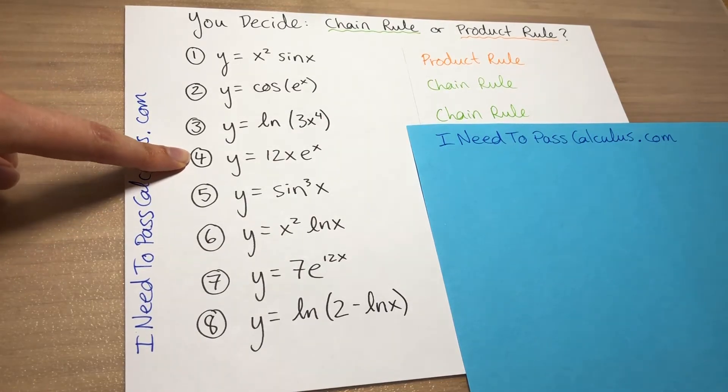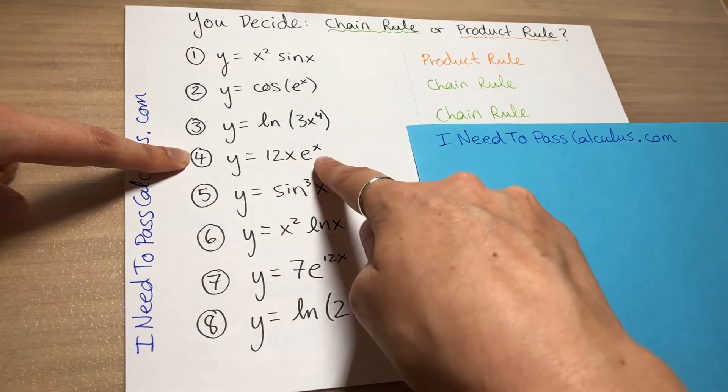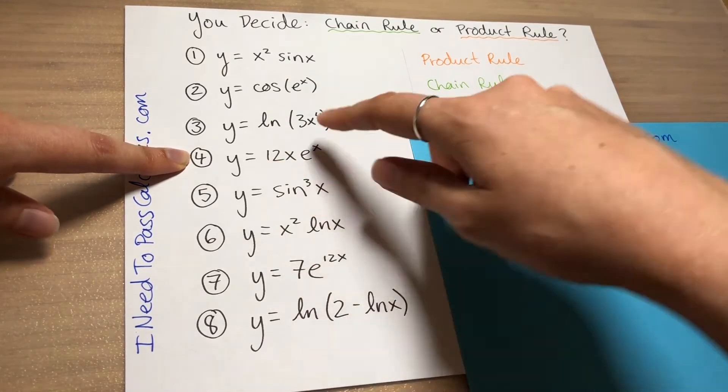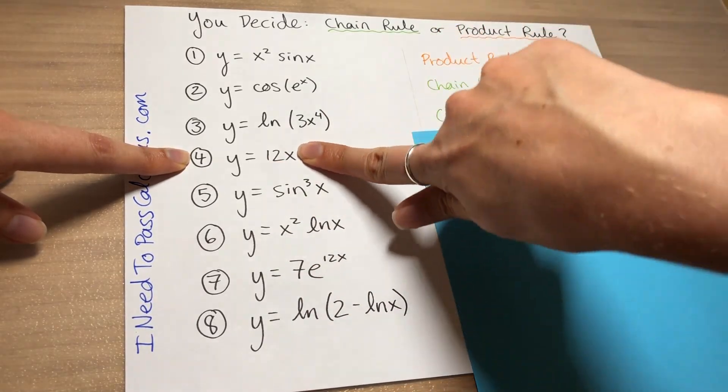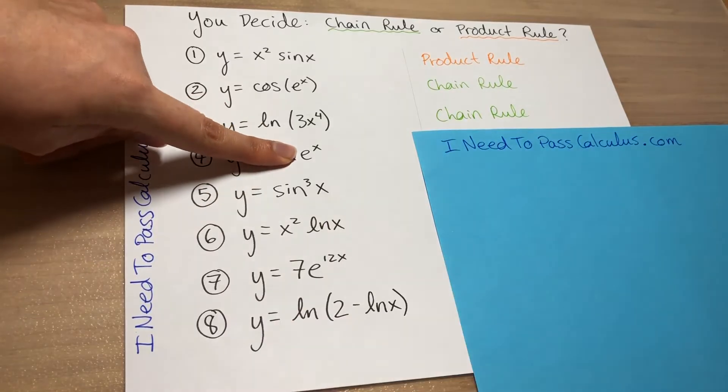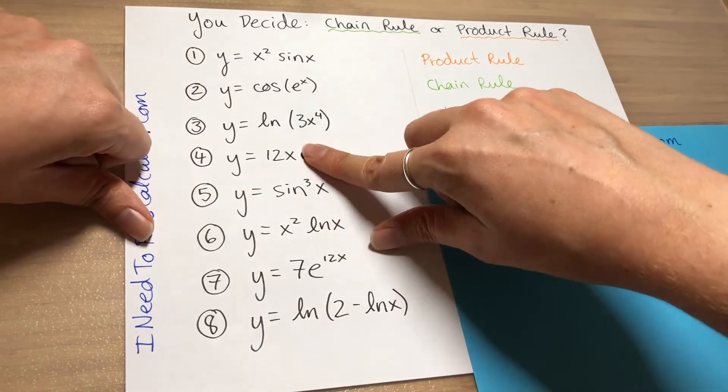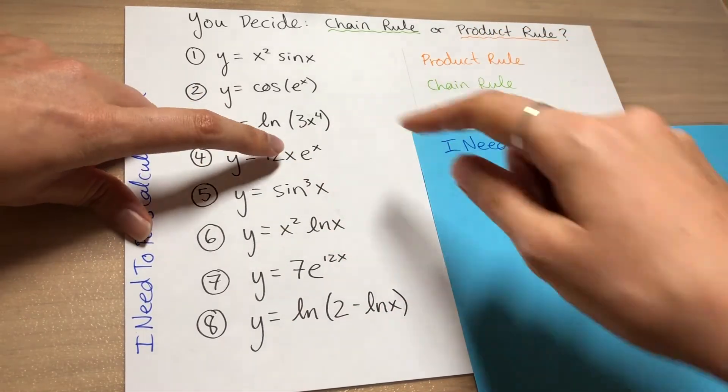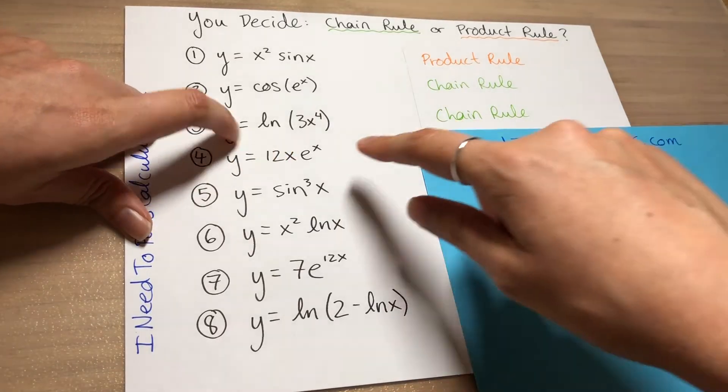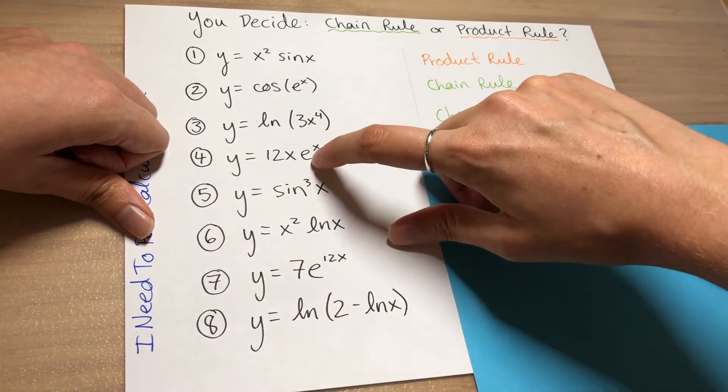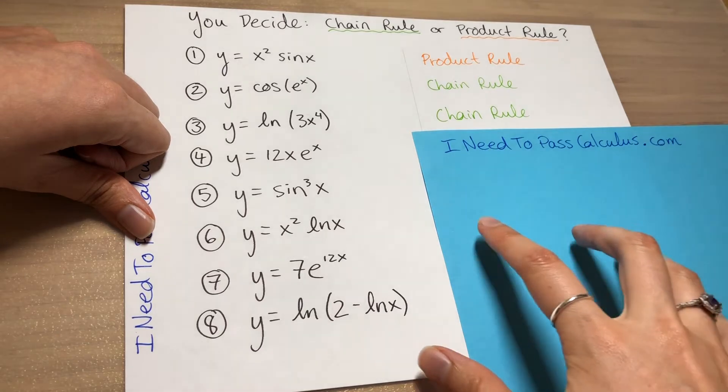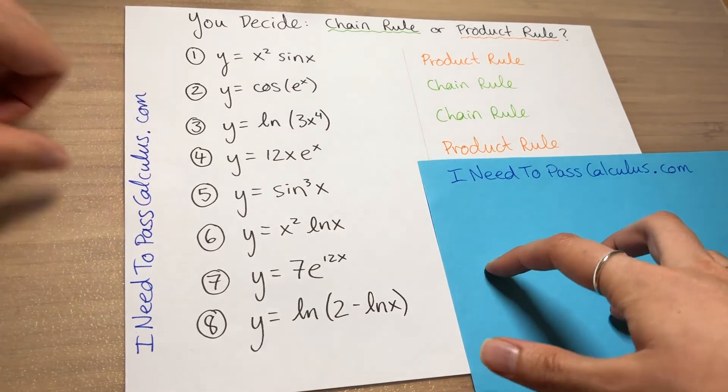Now problem four. If we look at the two main parts of this problem, we have 12x and we have e to the x. And each of those actually is its own standalone function. So these guys are glued together with multiplication right there. So this is a product rule derivative.